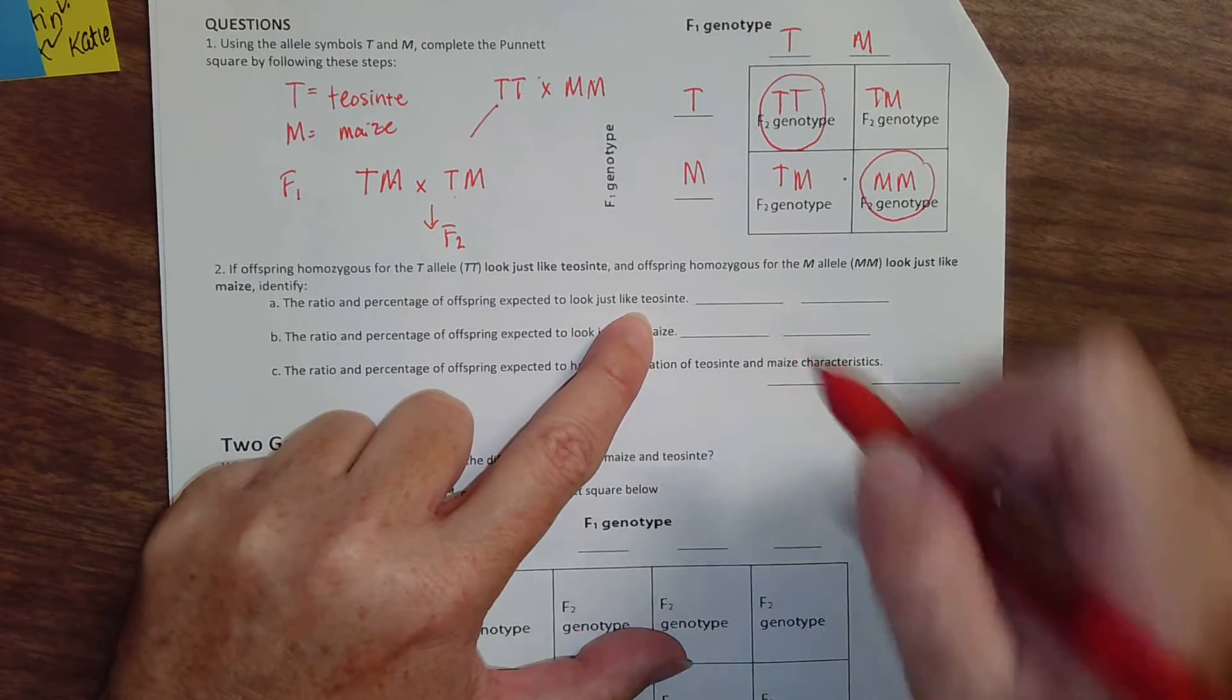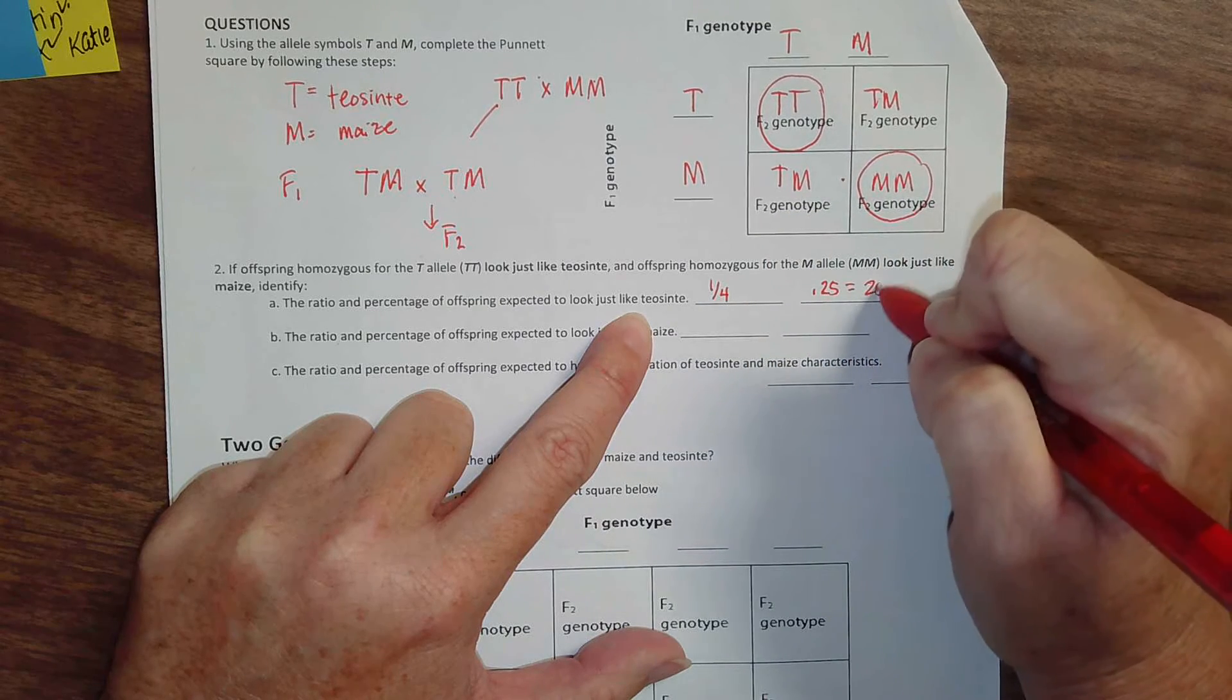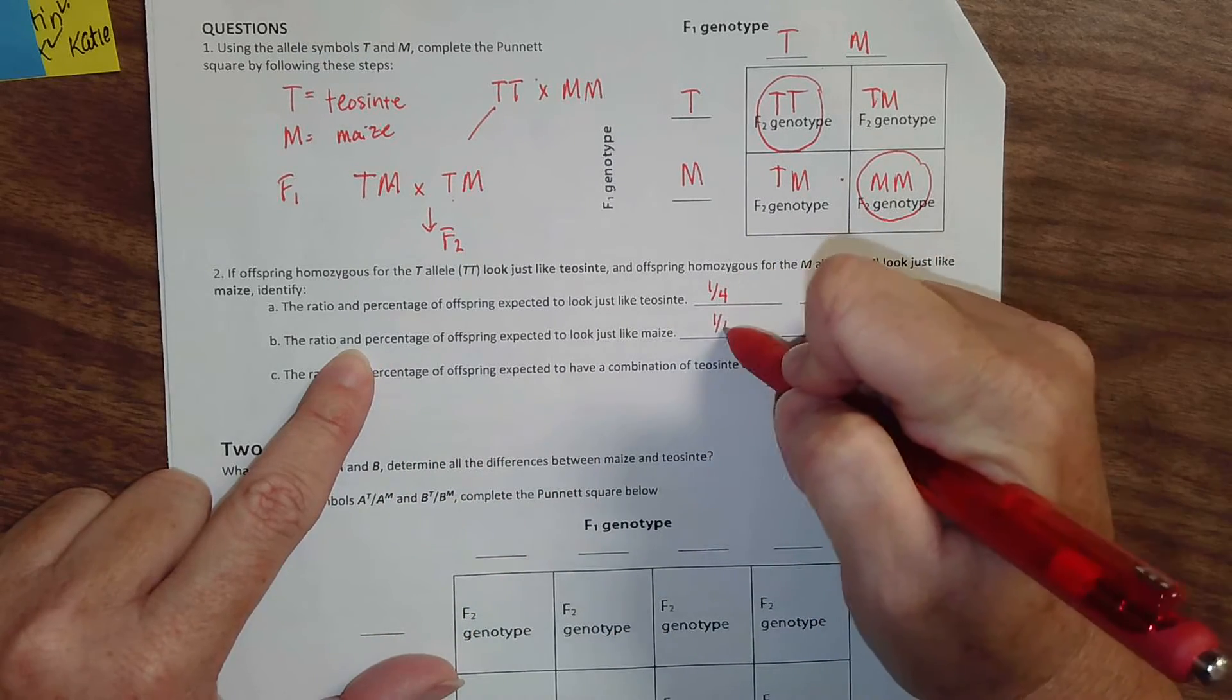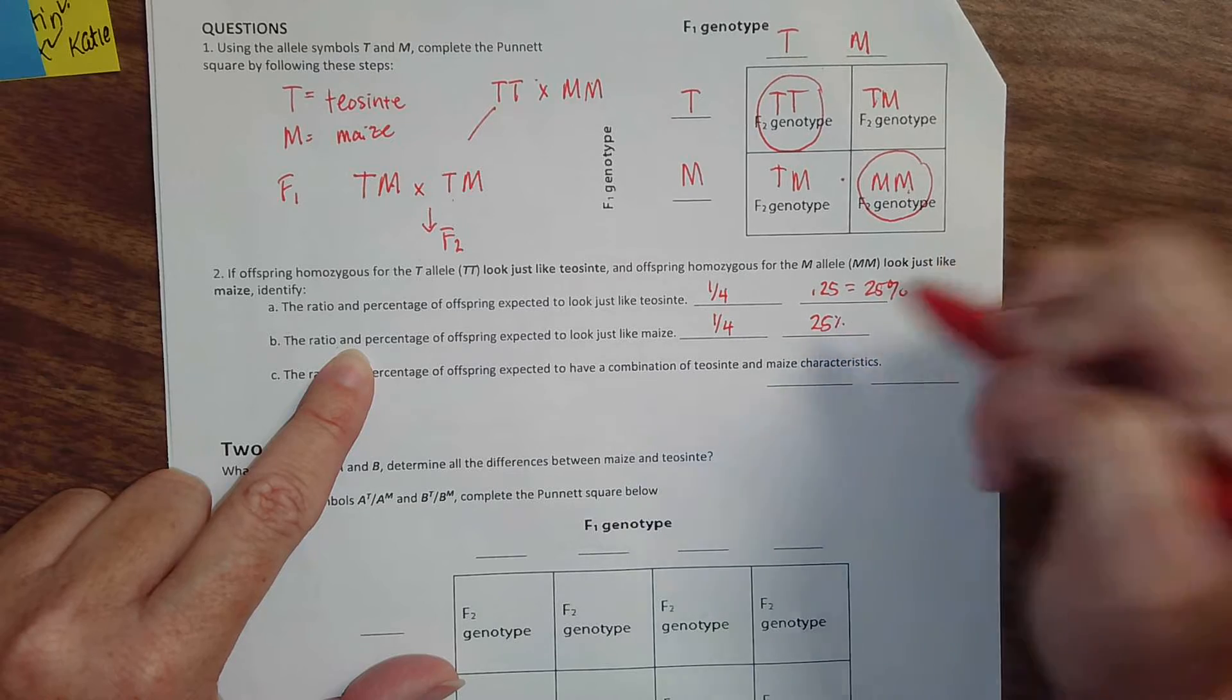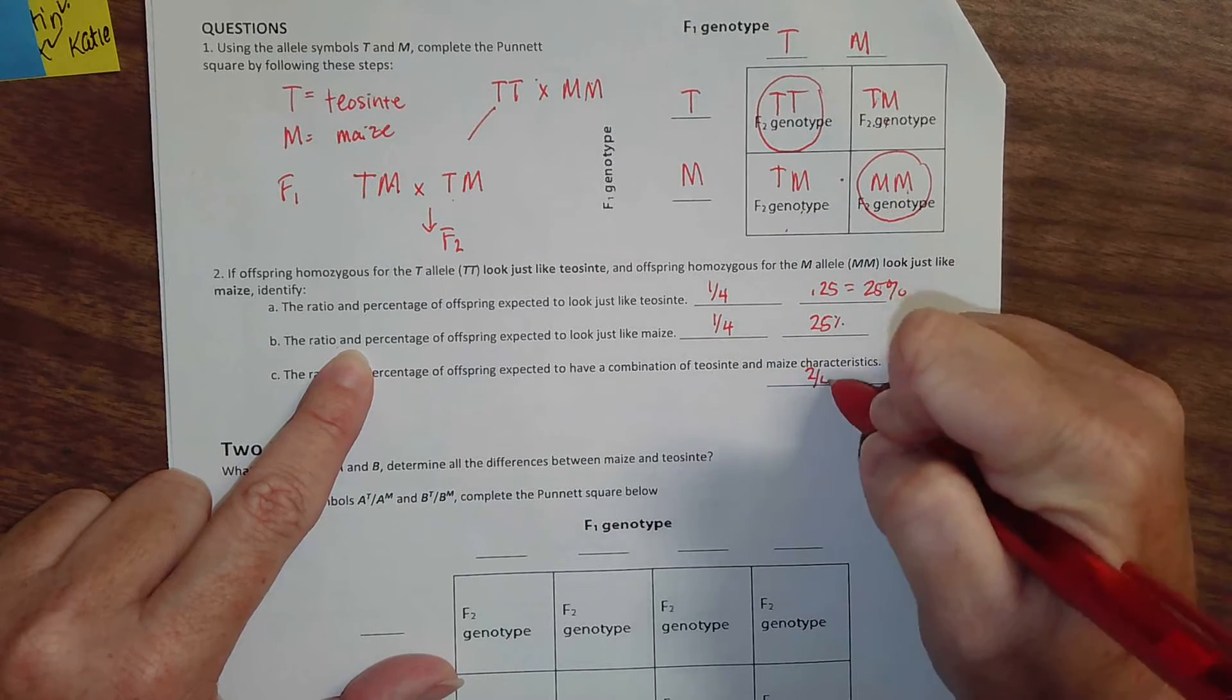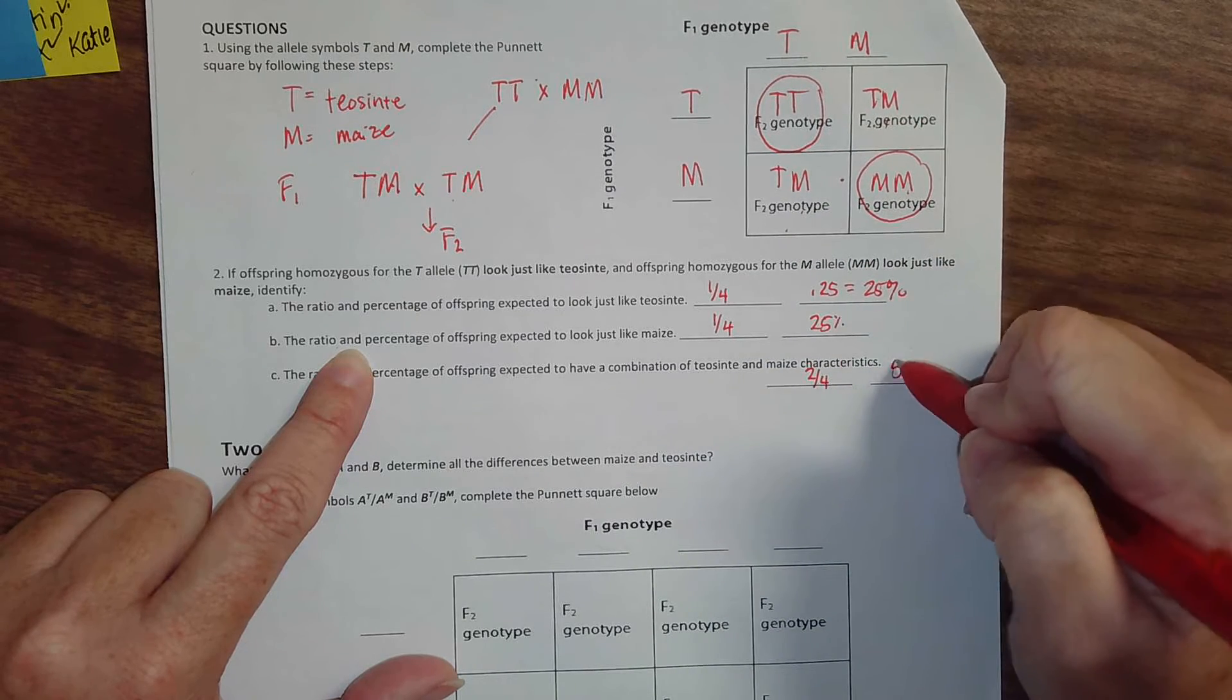That look just like Teosinte is one out of four, which is 0.25 or 25%. One out of four looks just like maize, also 25%. Two out of four look like a hybrid, and that's 50%.